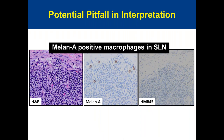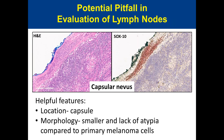Pitfalls in sentinel lymph node interpretation: MART-1/Melan-A positivity in melanophages can mimic metastatic melanoma due to granular cytoplasmic staining in macrophages. HMB45 helps distinguish this, as it is typically negative in macrophages. The second pitfall is capsular nevus: helpful features are capsular location, small cell size, and absence of cytologic atypia. Compare morphology with the primary melanoma specimen. HMB45 is negative in nevus cells and positive in melanoma. Ki-67 can also be used for proliferation assessment if in doubt.